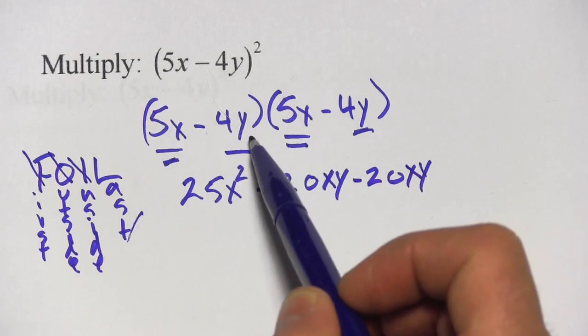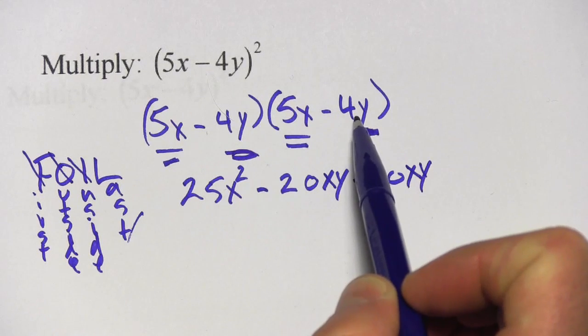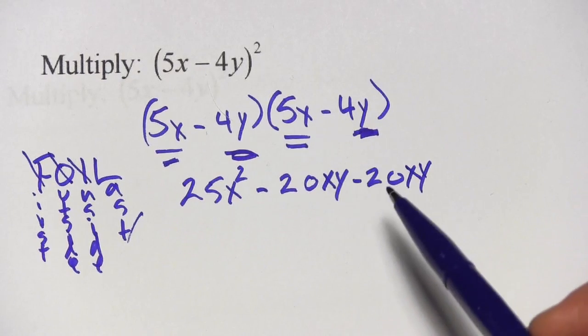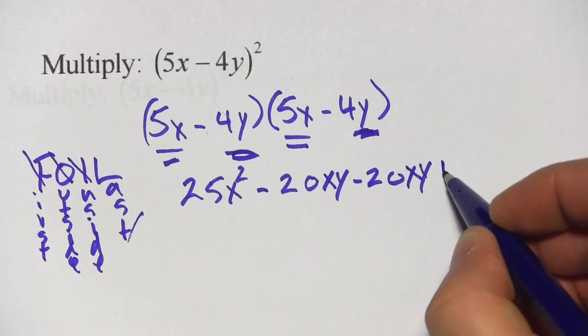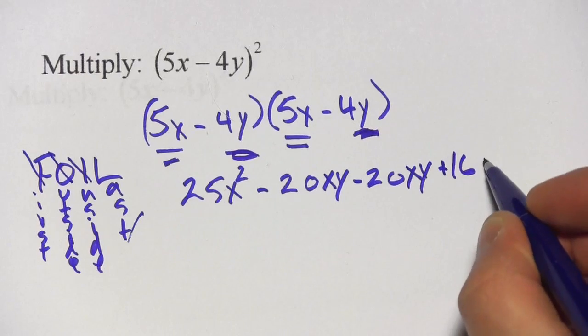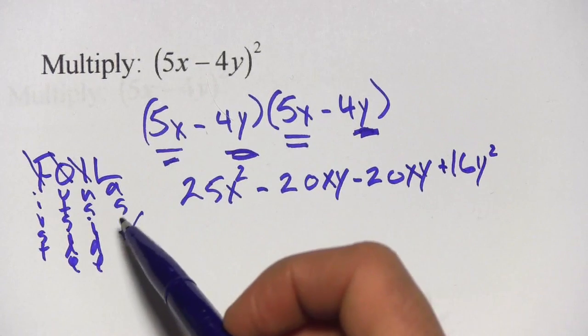Now we do the last terms. And the last terms are this one and this one. So negative 4y times negative 4y. Well, a negative times a negative, that is going to be a positive. And 4 times 4 is 16. So this is plus 16. And y times y is y squared. Okay, we've done our foiling.